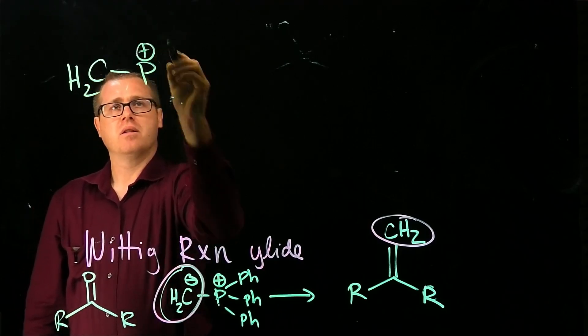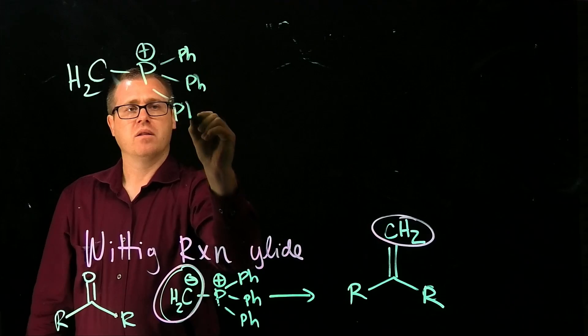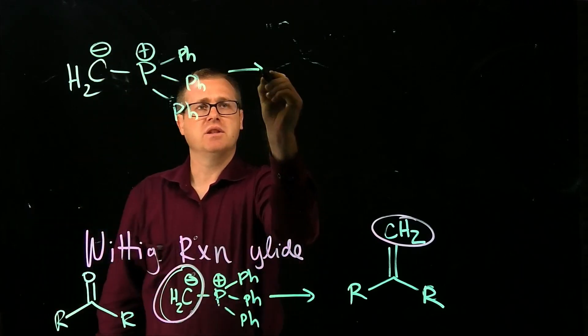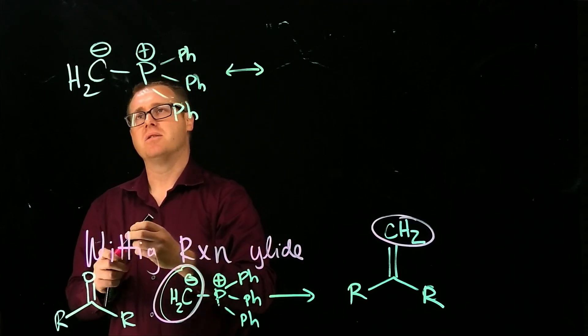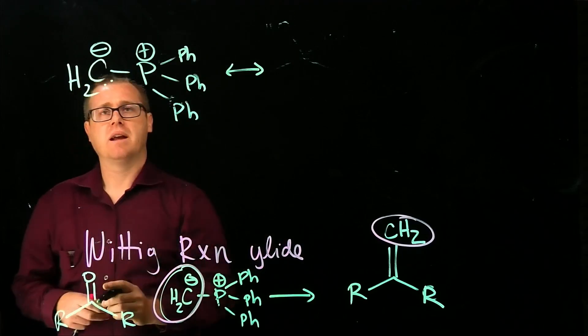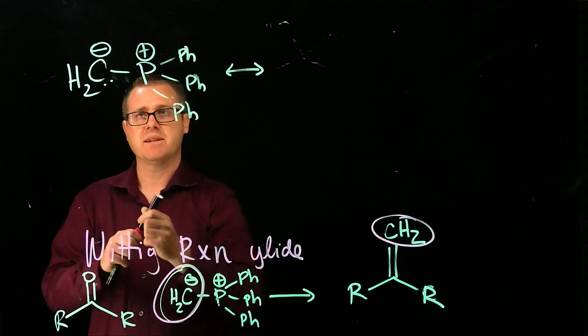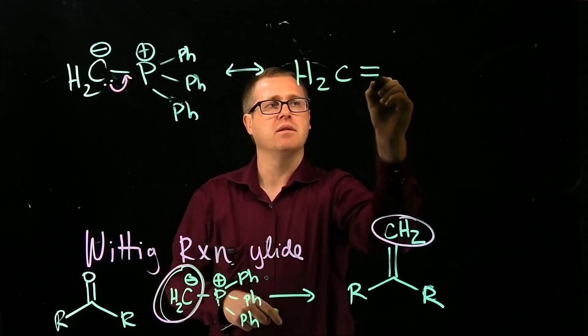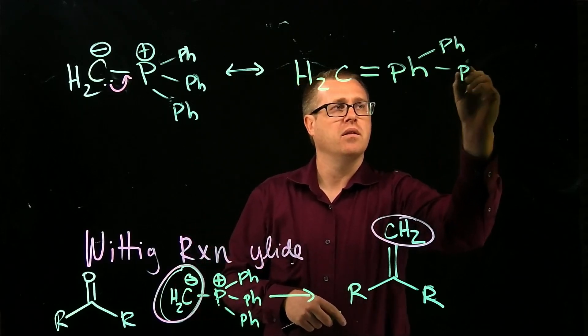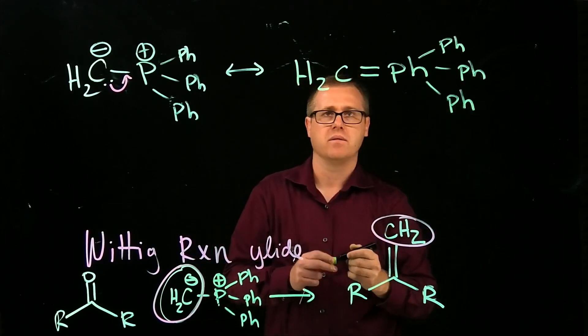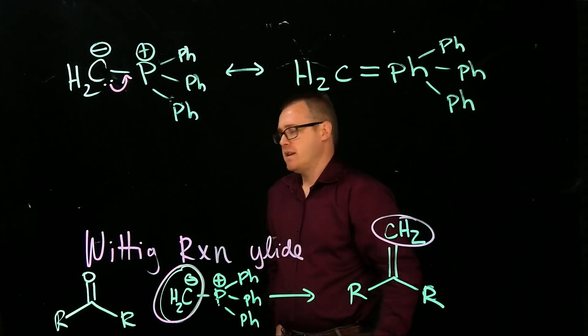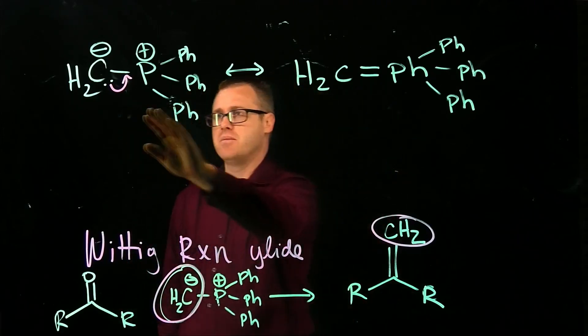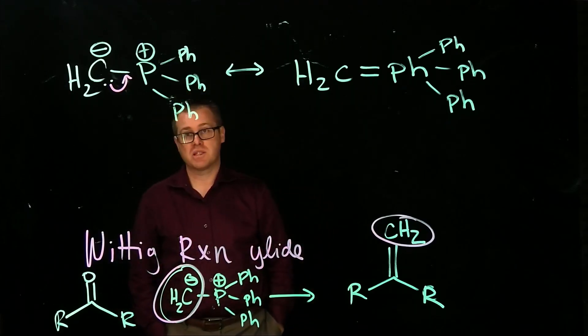So this ylide could have a resonance structure, and the ylide is the lone pair right there. So we could have a resonance structure in which the lone pair right there comes in to look like this. Now, based off of our understanding of Orgo 1, when you look at these two resonance structures, which one would you predict would be the most stable resonance structure?